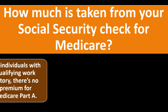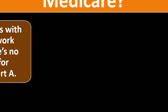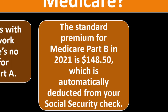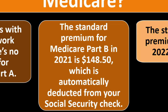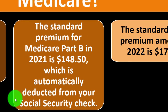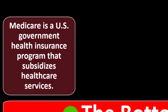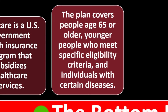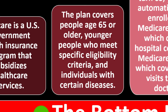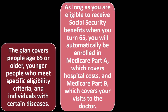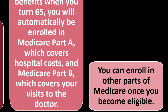How much is taken from your Social Security check for Medicare? For individuals with qualifying work history, there's no premium for Medicare Part A. The standard premium for Medicare Part B in 2021 is $148.50, automatically deducted from your Social Security check. The standard Part B premium in 2022 is $170.10. The bottom line: Medicare is a U.S. government health insurance program that subsidizes health services, covering people age 65 or older, younger people who meet specific eligibility criteria, and individuals with certain diseases. As long as you are eligible for Social Security benefits when you turn 65, you will automatically be enrolled in Medicare Part A (hospital costs) and Part B (doctor visits), and can enroll in other parts once eligible.